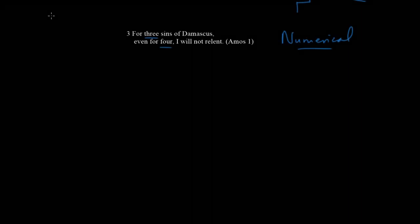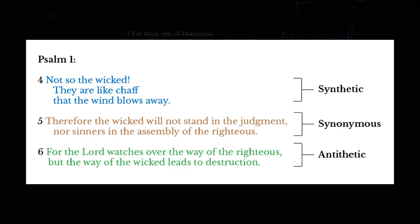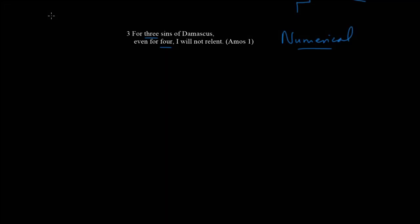At this point, parallelism provides a great sense of clarity when you open up almost any poetic passage in the Bible. Psalm 1 is a great example. As you look at this image, you can see that all three types of parallelism are present, and suddenly there's order. As we read we go, 'Aha, now I can see what the poet is really doing.'